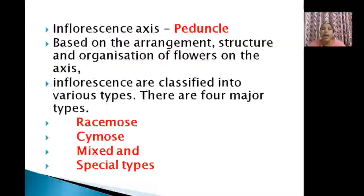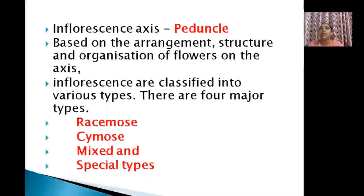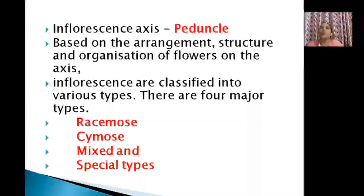The axis of an inflorescence is called the peduncle. You already studied that the pedicel is the stalk of a single flower. So the stalk or axis bearing the cluster of flowers is known as the peduncle. Based on the arrangement, structure, and organization of flowers on the axis, you can have different types of inflorescence.